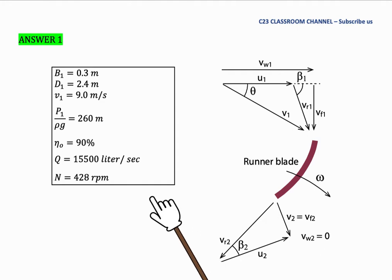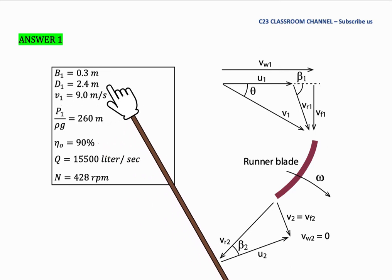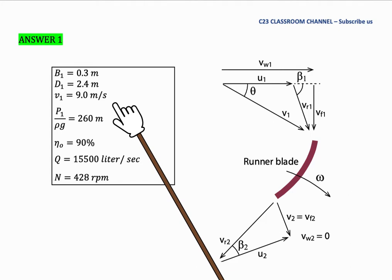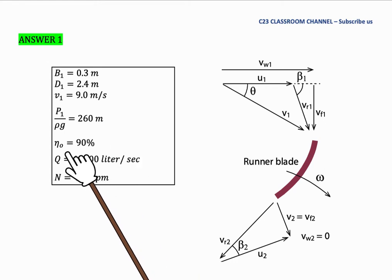Next, we need to list all the parameters that we get from the question. We have B1 equals 0.3, D1 equals 2.4 meters, V1 equals 9 meters per second. We have a pressure head P over ρg equals 260 meters. We have overall efficiency 90%, flow rate 15,500 liters per second, and RPM which is 428.